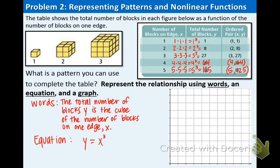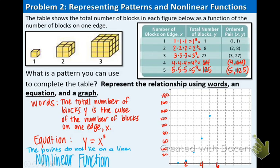Now take a moment to set up your graph and plot the points. Now that we have those points plotted, let's think to ourselves — does that look like a straight line? These points do not lie on a line, so that means that this function is nonlinear. We're going to write that as our conclusion sentence and then move on to the next example.